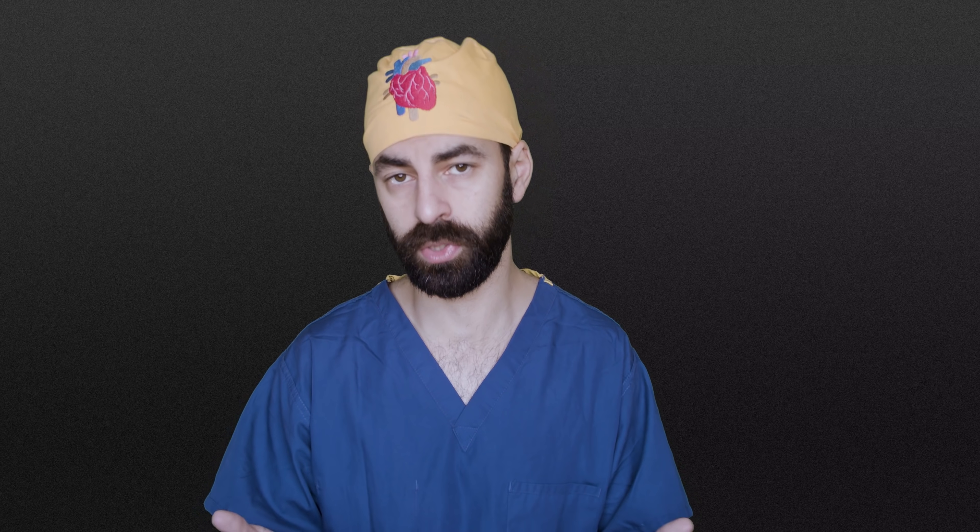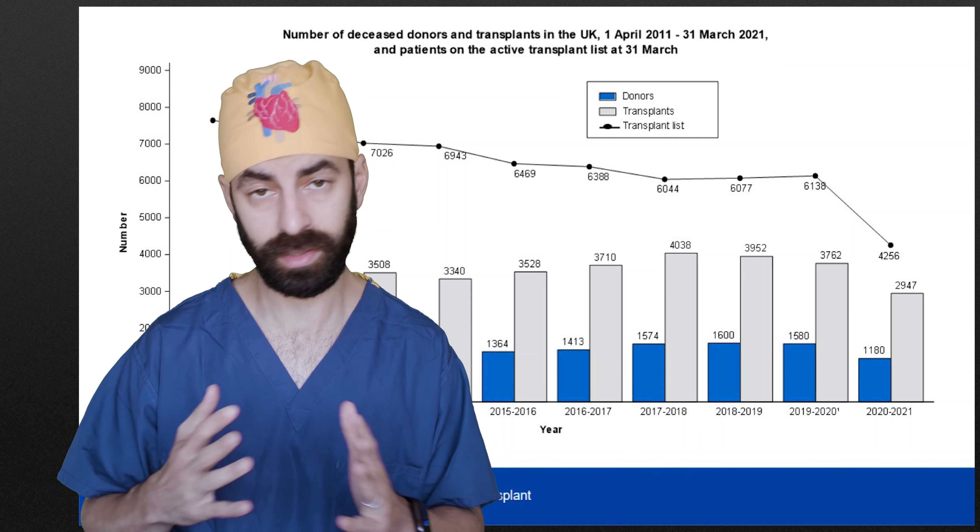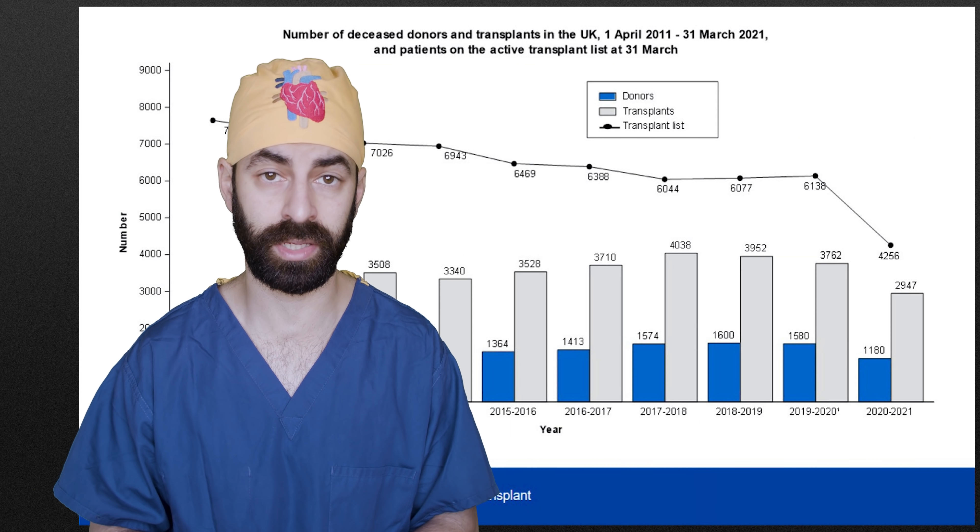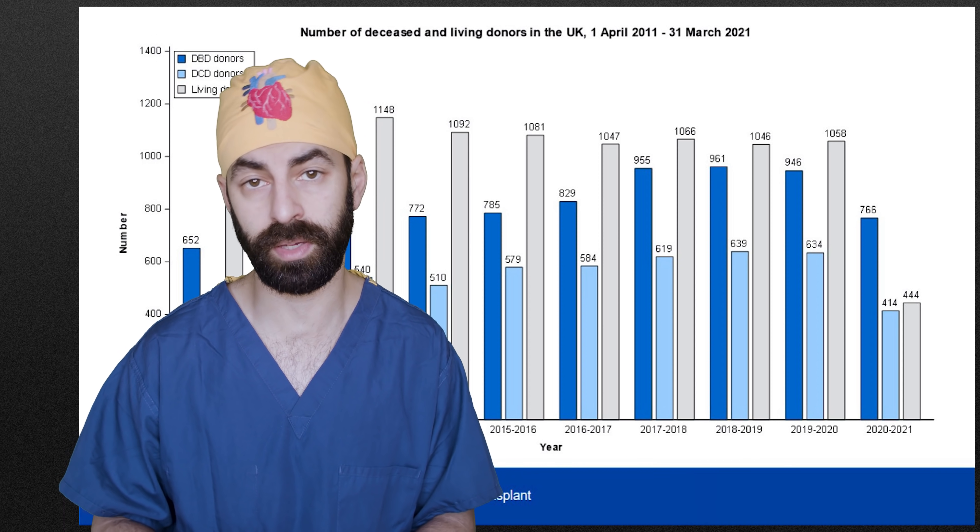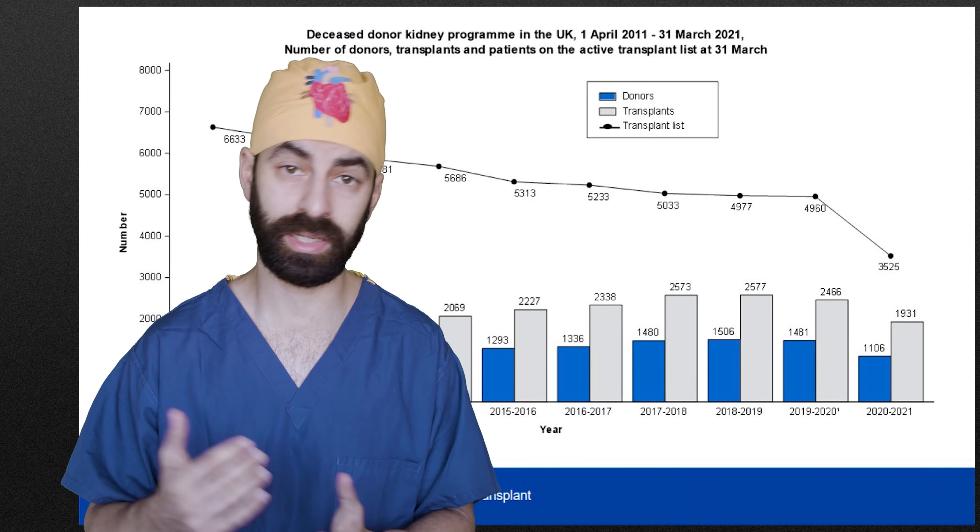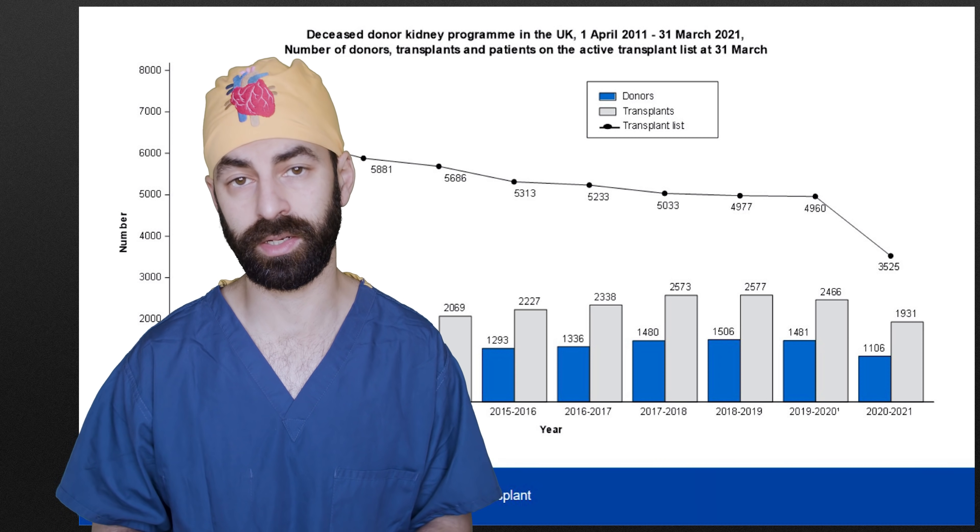For many years there was that justified skepticism because we simply didn't have the biological capability to make it work. But it really feels like that is changing now due to recent developments in genetic engineering. So what's the need? Tens of thousands of people die waiting for an organ every year. Waiting lists are long and those in need of hearts or livers have high mortality rates. The pandemic has been very bad news for transplants as well.